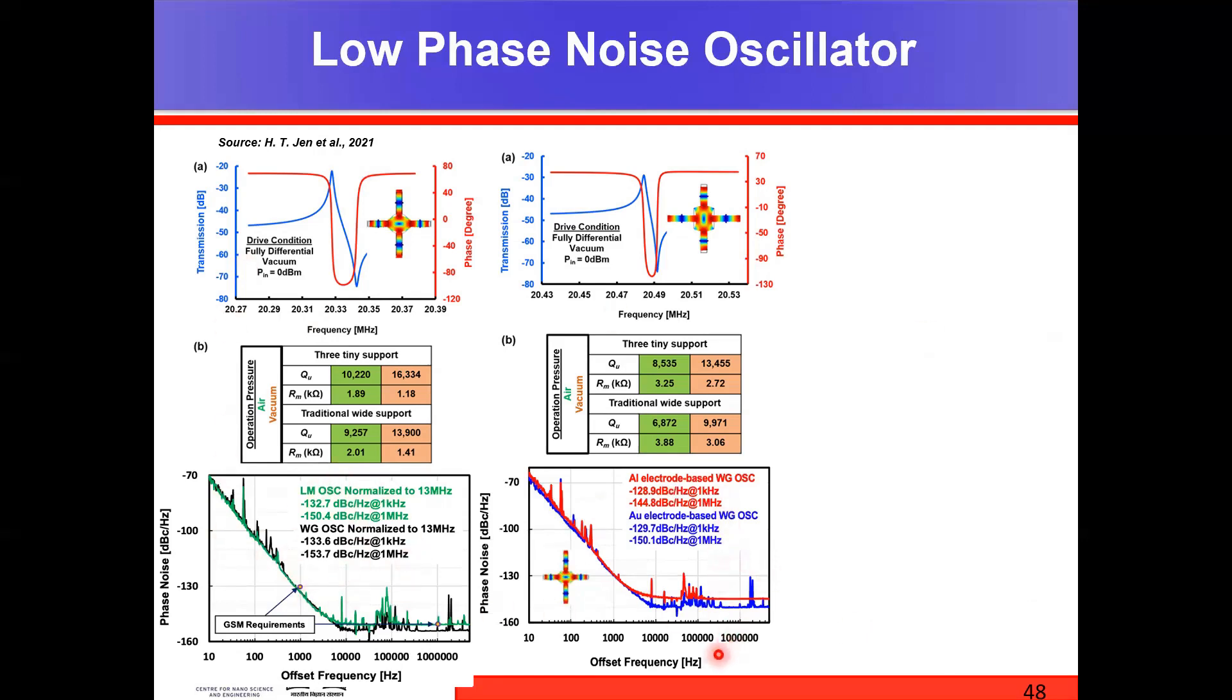We have attained a phase noise of minus 133.6 and minus 132.7 dBc per hertz at one kilohertz offset, and minus 153.7 and minus 150.4 dBc per hertz at one megahertz offset. When these values were down-converted to 13 megahertz as you can see over here, the GSM communication spectrum requirements are satisfied. This goes on to show the potential that support transducer topology holds to attain low phase noise oscillators for frequency reference applications.